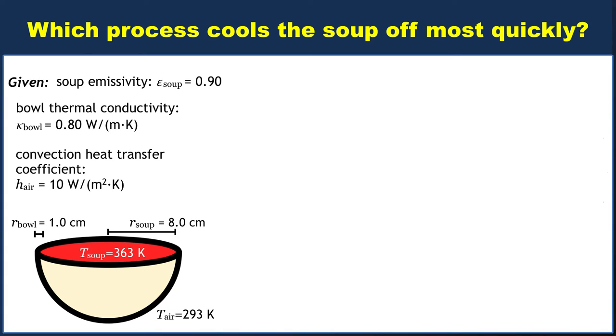I'm going to assume that you're not blowing across the top of the soup. We don't really want the soup to cool off. So 10 watts per meter squared Kelvin is a reasonable assumption. Really these values are just intended to give us an order of magnitude estimate of the powers associated with the various cooling processes.